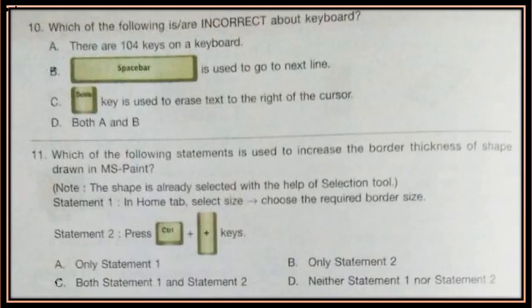Question 10. Which of the following is or are incorrect about a keyboard? A: There are 104 keys on a keyboard. B: Space bar is used to go to the next line. C: Delete key is used to erase text to the right of the cursor. D: Both A and B. Which is the incorrect statement?